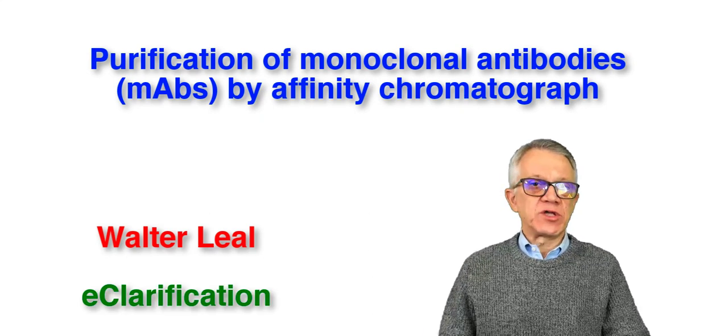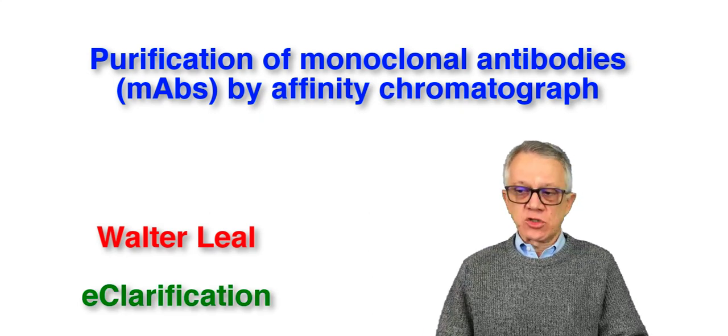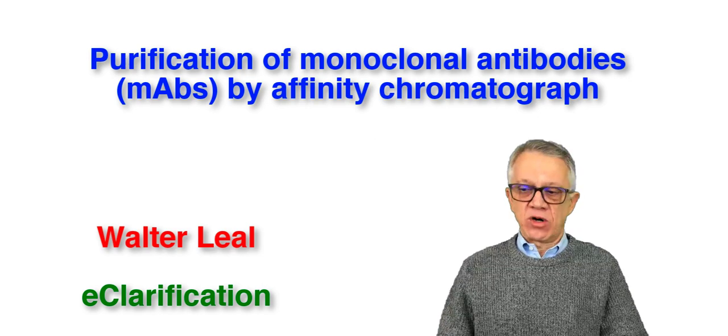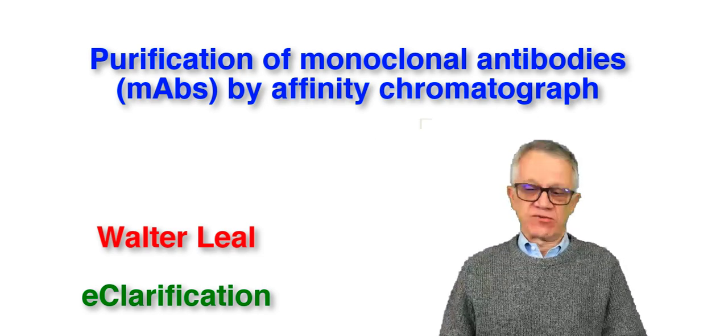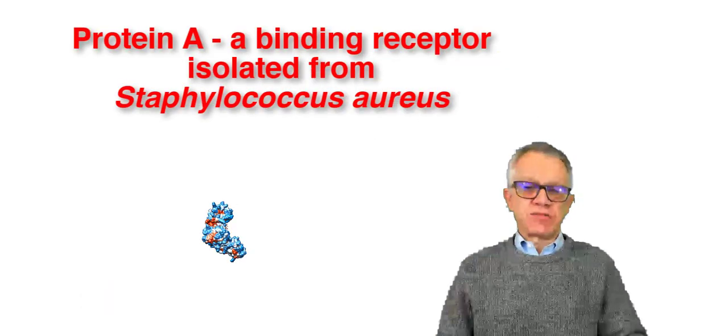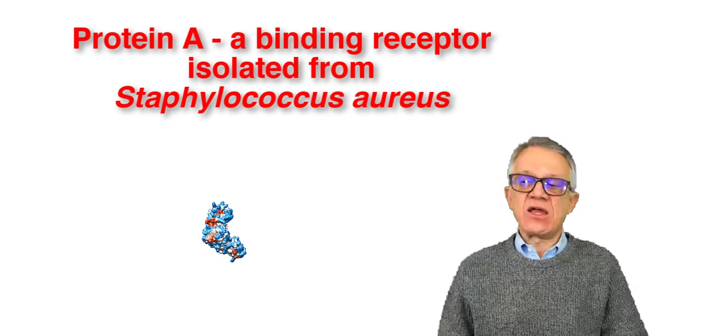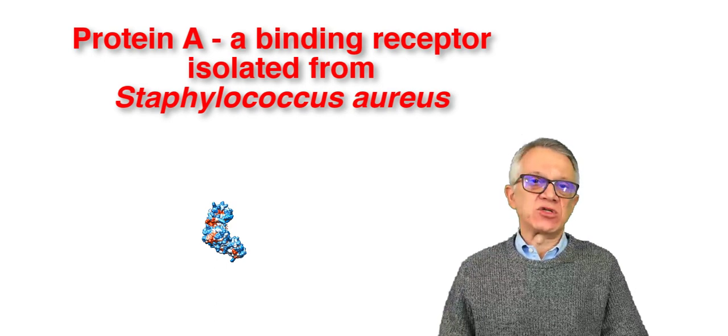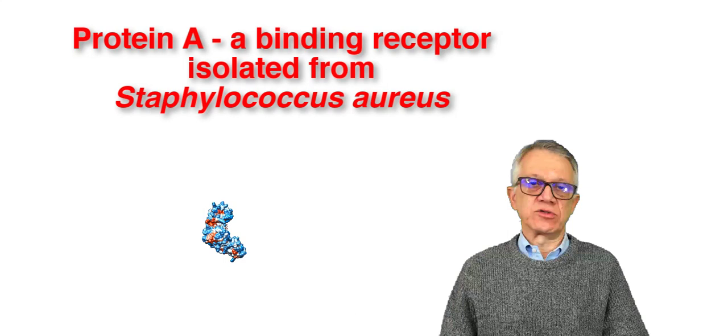In this e-clarification today, I would like to talk about purification of monoclonal antibodies by affinity chromatography. This is based on a protein called protein A, a binding receptor isolated from Staphylococcus aureus.